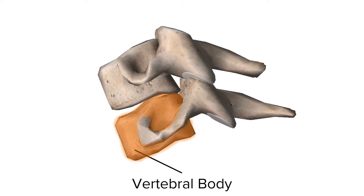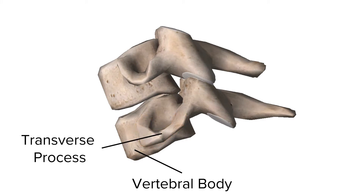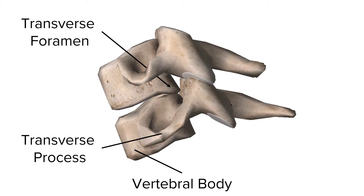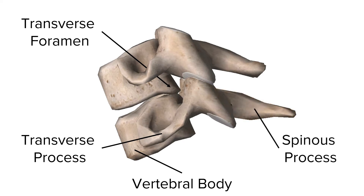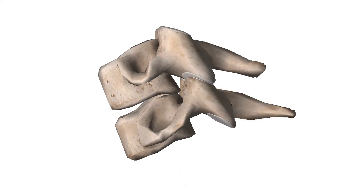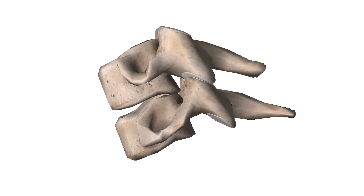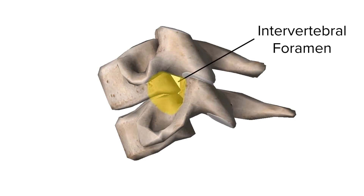Here we have the vertebral body, the transverse process, and here we're shooting an arrow through the transverse foramen. Here's the spinous process, and most importantly to the oblique C-spine, this space here is known as the intervertebral foramen.